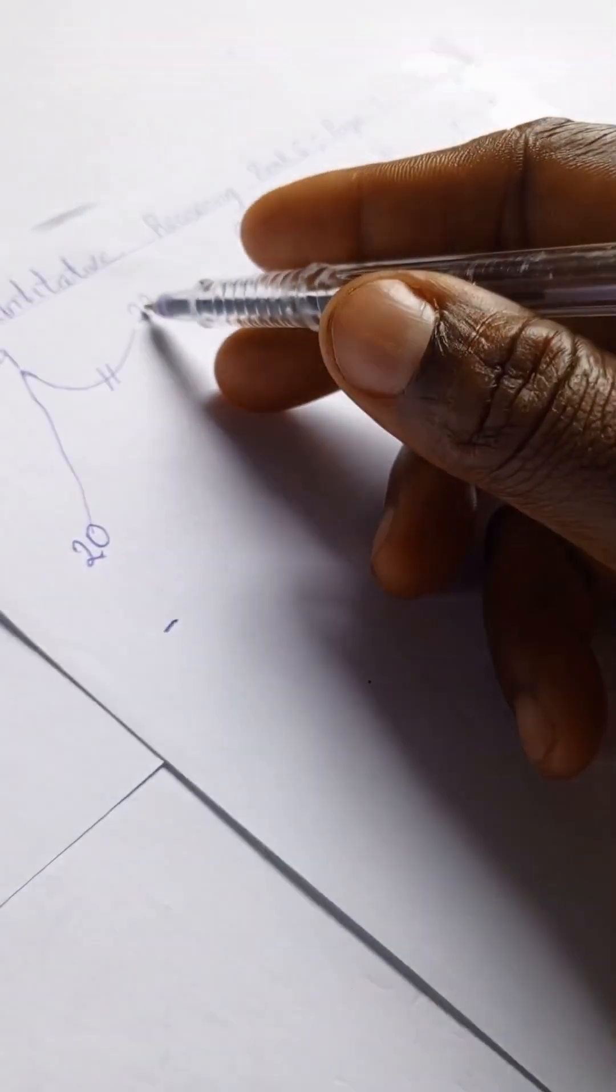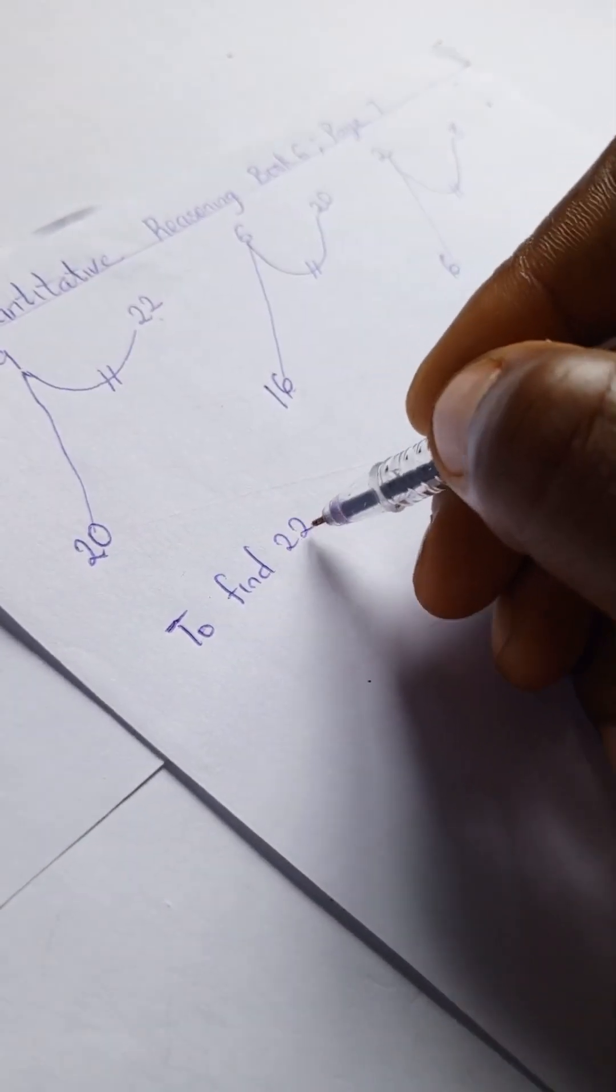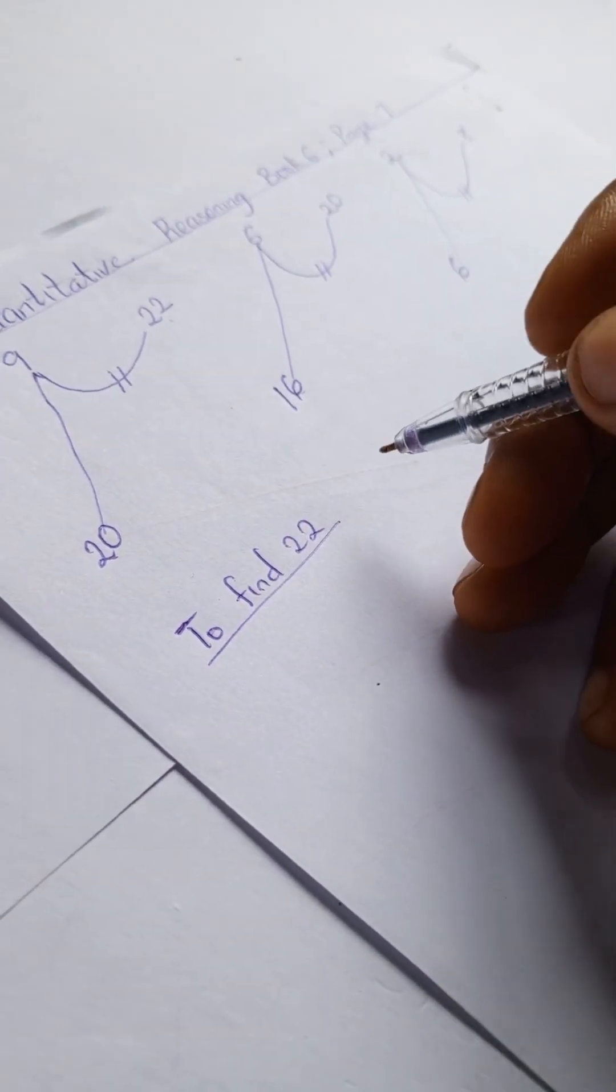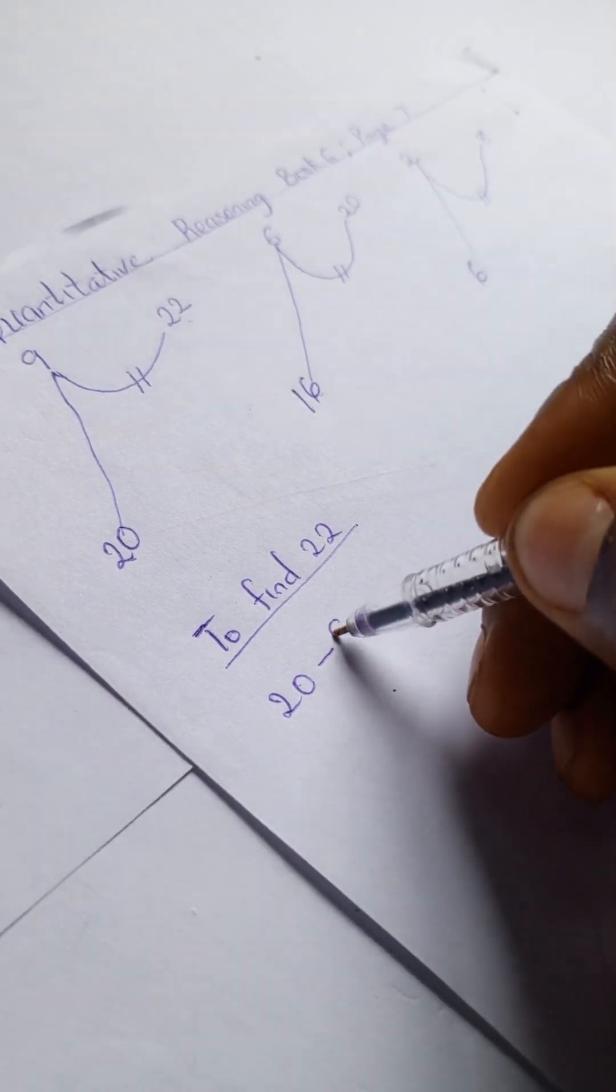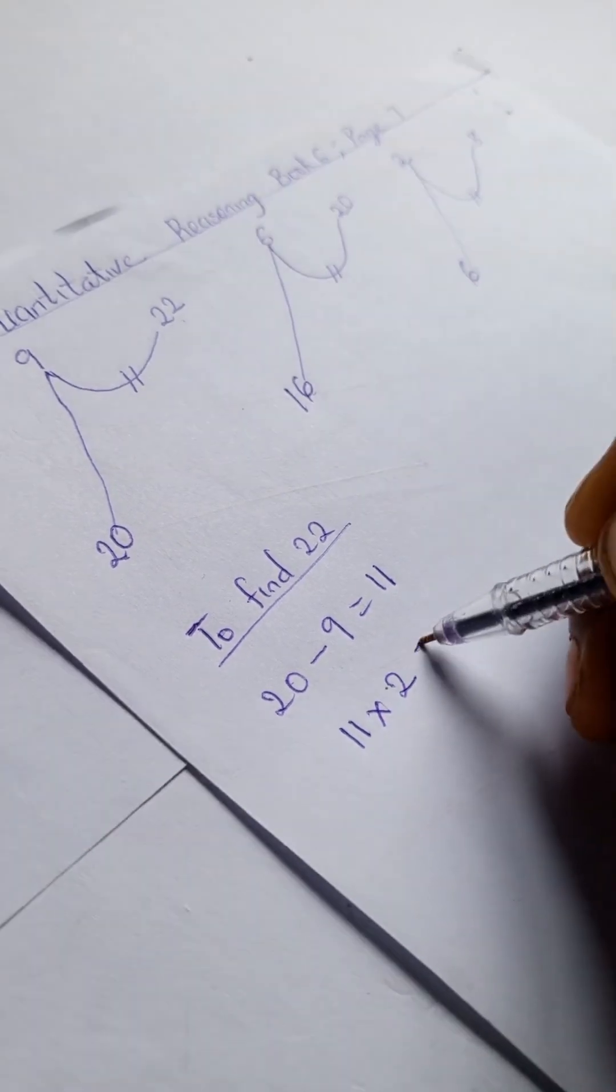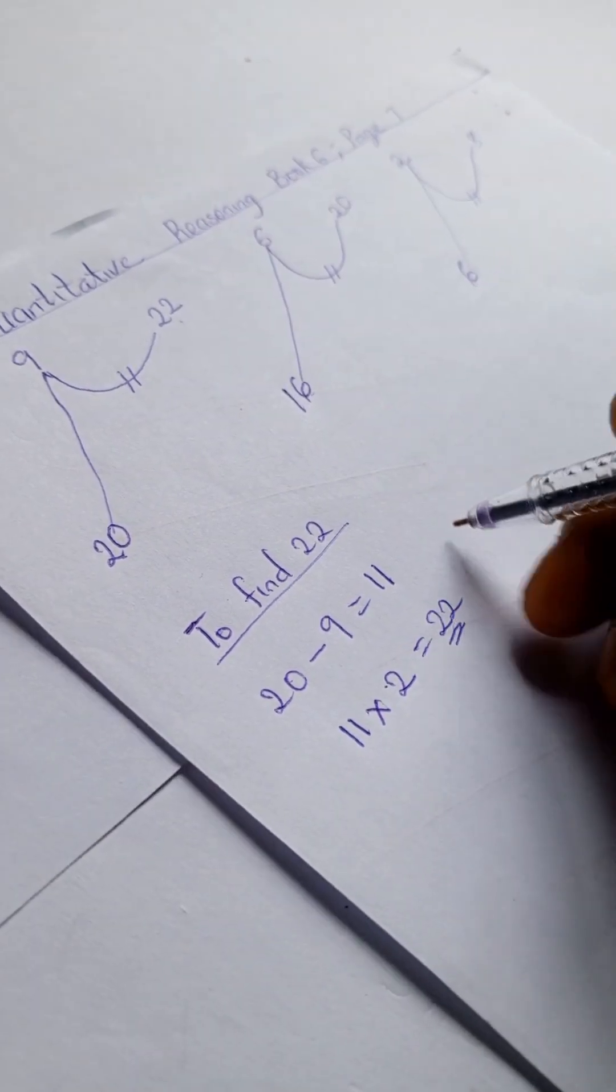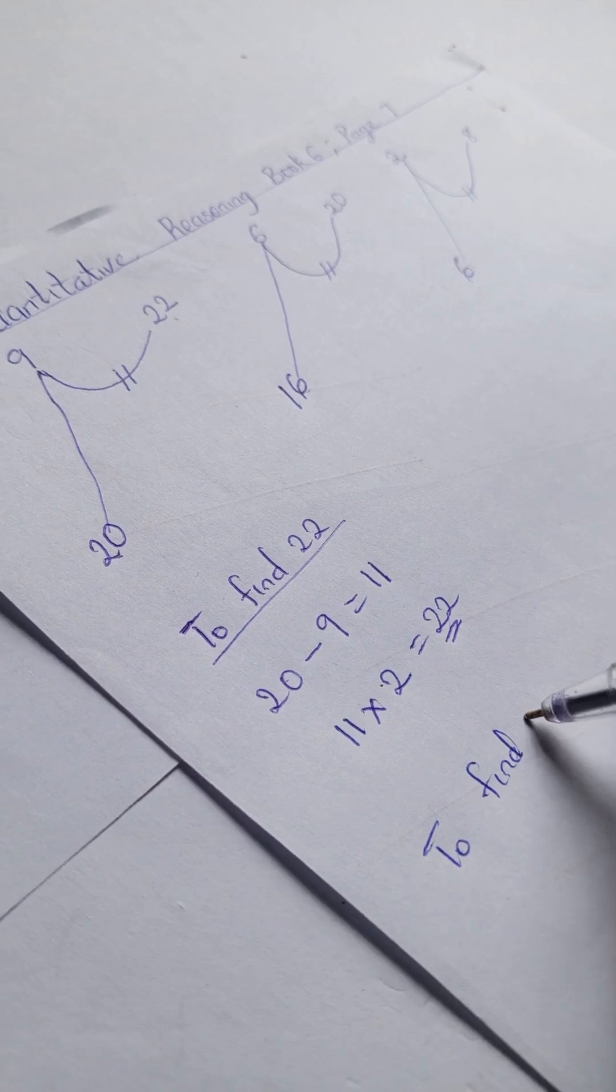Let's find 22. To find 22, we're going to have 20 minus 9 equals 11. 11 times an imaginary 2 gives us 22. Okay, so to find 20...